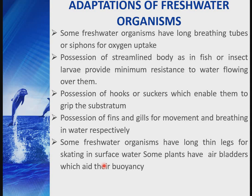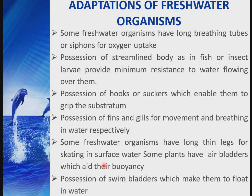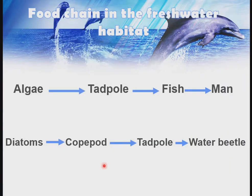Some freshwater organisms have long legs for skating on the water surface. Some plants have air bladders which aid their buoyancy in water, while some organisms possess swim bladders that enable them to float. These are the different adaptive features by which organisms adapt to their freshwater environment.